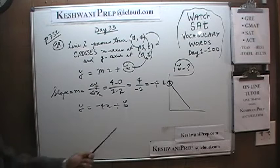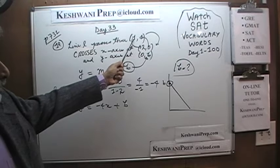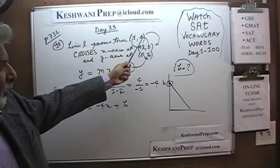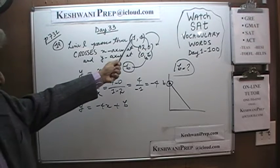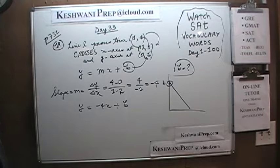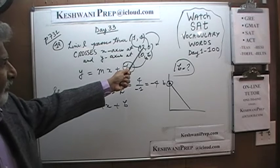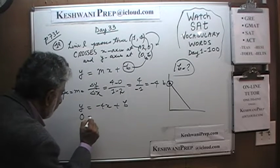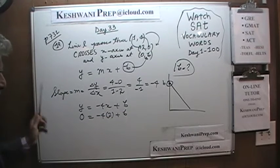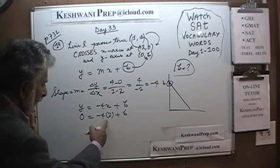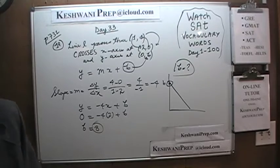So y equals negative 4x plus B. We still don't know the y-intercept. We can substitute the coordinates of either point. Let's use (2, 0) since it's less work. When x equals 2, y is 0: 0 equals negative 4 times 2 plus B, giving 0 equals negative 8 plus B. Bringing the negative to this side, B is simply equal to 8. The y-intercept we are looking for is just 8.